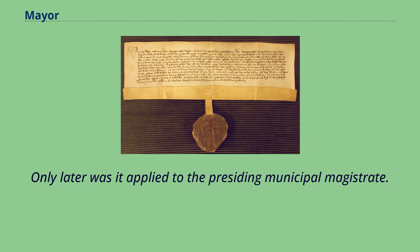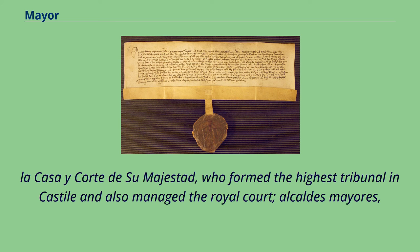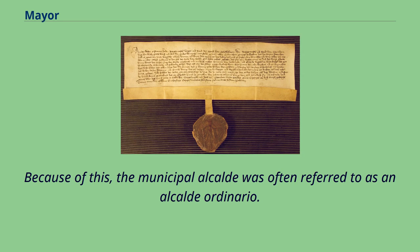The word al-qadi originally was used for simple judges, as in Andalusian Arabic, and only later was it applied to the presiding municipal magistrate. This early use continued to be reflected in its other uses, such as Alcaldes del Crimen, the judges in the Audiencias; Alcaldes de la Casa y Corte de Su Majestad, who formed the highest tribunal in Castile and also managed the royal court; Alcaldes Mayores, a synonym for Corregidor; and Alcaldes de Barrio, who were roughly the equivalent of British parish constables. Because of this, the municipal Alcalde was often referred to as an Alcalde ordinario.